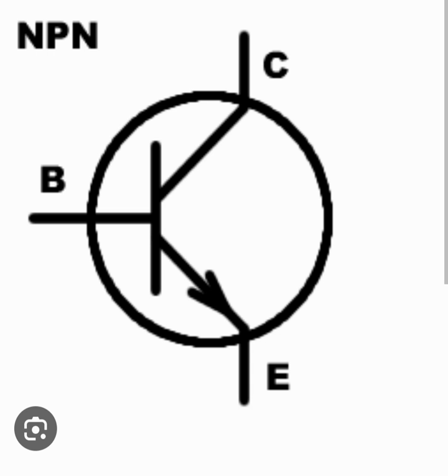NPN stands for N type of semiconductor, P type of semiconductor, and again N type of semiconductor. They are connected to each other so that the P semiconductor material is sandwiched between two adjacent N type semiconductors.